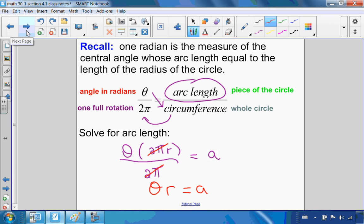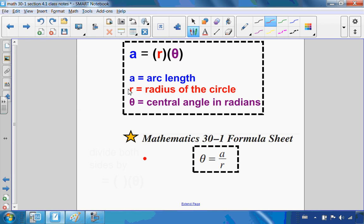That's where the formula comes from. Let's look at that formula in more detail. Theta times r equals arc length. a stands for the arc length, r stands for the radius of the circle, and theta stands for the central angle in radians. On the formula sheet, your 30-1 formula sheet, they give you theta equals a over r.